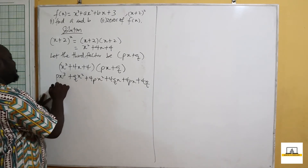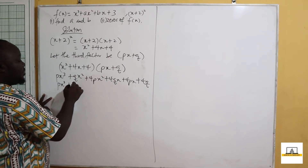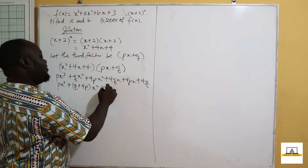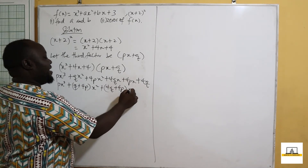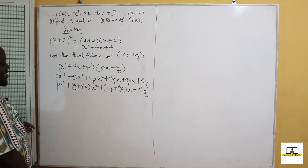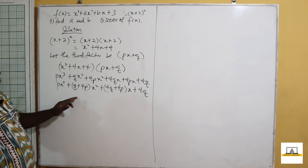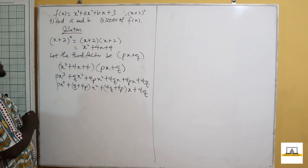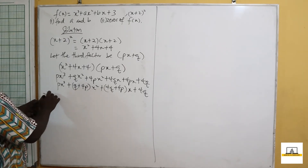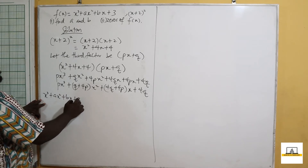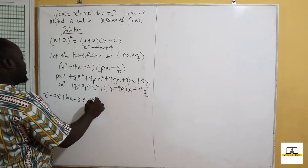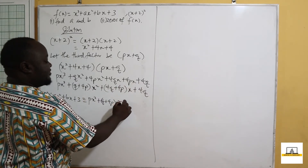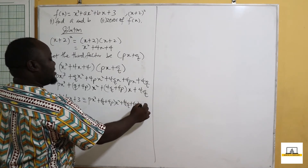Now let's group like terms. We shall have px cubed, plus (q + 4p) as the coefficient of x squared, then (4q + 4p) as the coefficient of x, and then 4q as the constant. We've written this in the form x cubed plus x squared term plus x term plus constant, which is equivalent to x cubed plus ax squared plus bx plus 3.